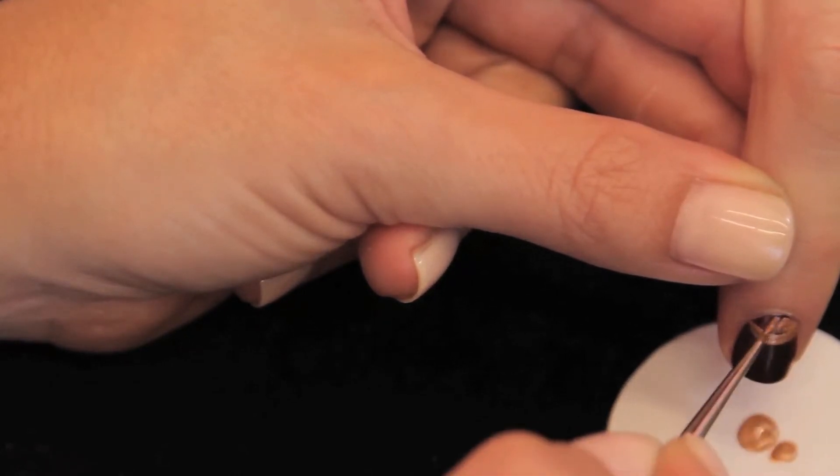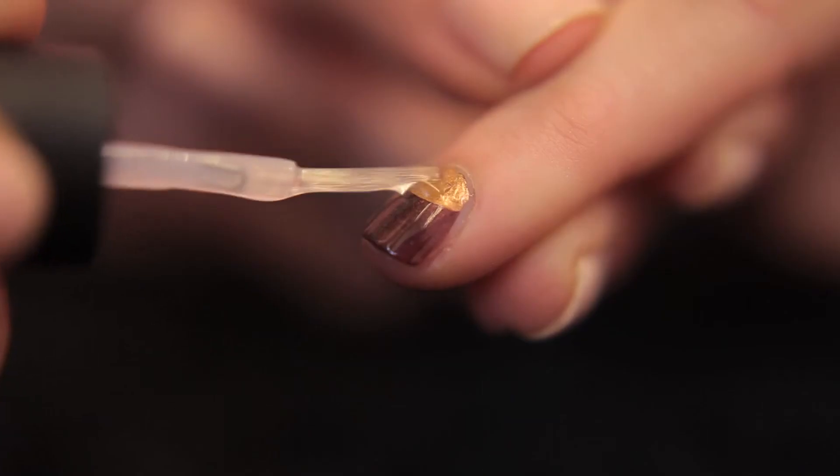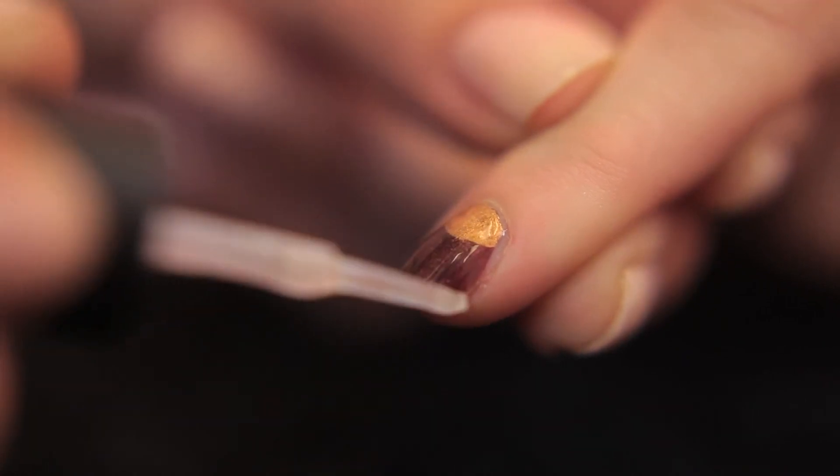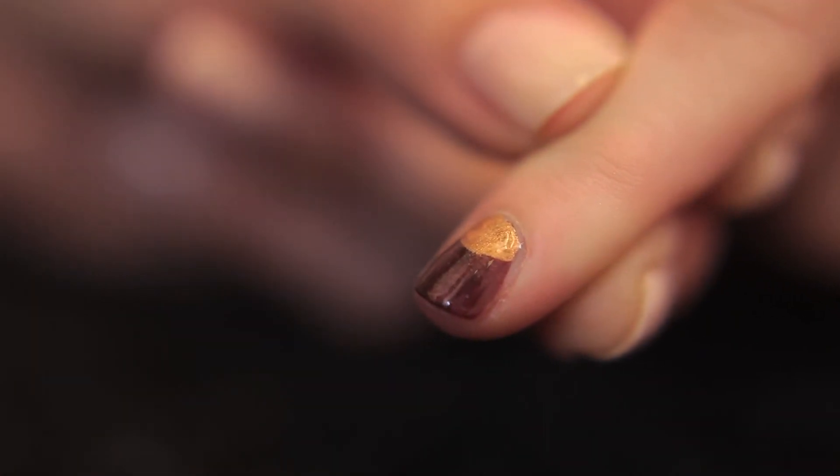This time, notice that I'm using a tapping technique to fill in, which is good if you're nervous about messing up. If you get any on the cuticle, don't worry, you can always clean up imperfections with a gel brush and polish remover.